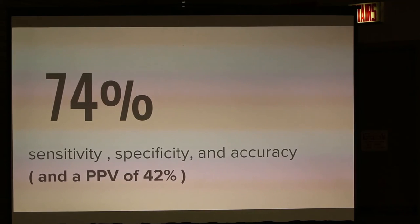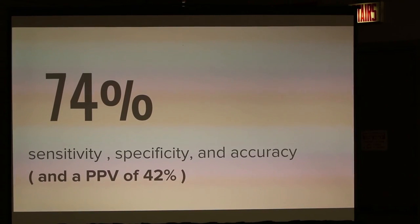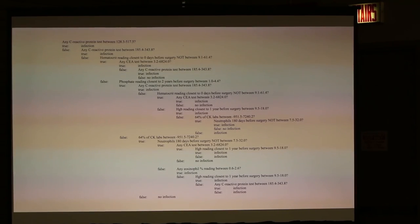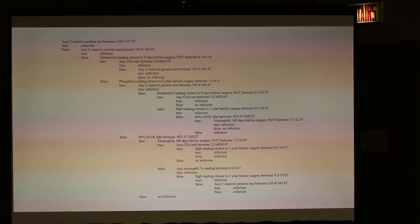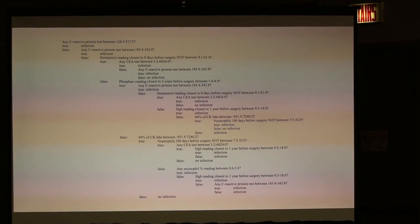My results: because of how I optimized my fitness function, I achieved 74% sensitivity, specificity, and accuracy, with a positive predictive value of 42%. The actual decision tree generated is visible in the paper. One thing to note is that some branches will never logically be evaluated just because of how it evolved, so you could reduce this tree even smaller to get its logical equivalent.